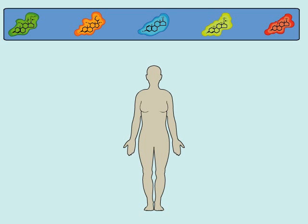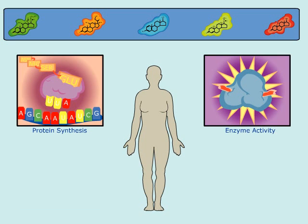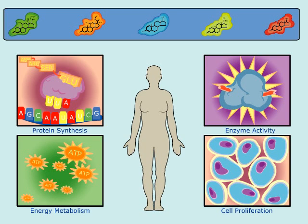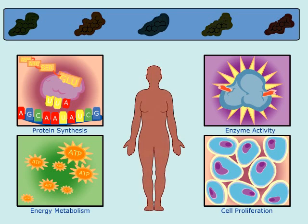Steroids exert their effects by altering cellular processes at many levels, including both short and long-term effects on protein synthesis, enzyme activity, energy metabolism, and cellular proliferation. These functions are critical to the maintenance of homeostasis in a healthy body. When steroid-modulated systems are not functioning properly, they are often associated with severe disease states, including sometimes cancer.